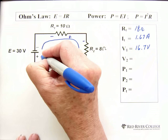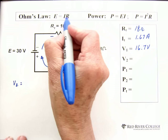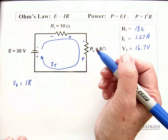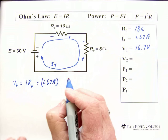So, again, we have our current flowing through here. This is IT. We want the voltage drop here. So, we were looking for V2. And we're going to use Ohm's Law, which is IR. We're going to have the current that's running through resistor 2 and resistor 2. The current running through it is our 1.67 amps. And the resistance is 8 ohms.